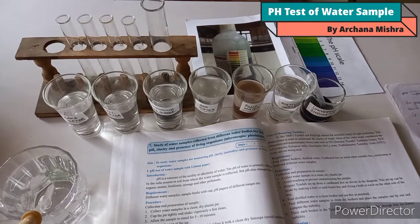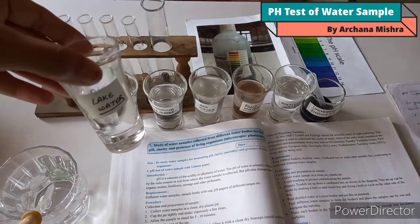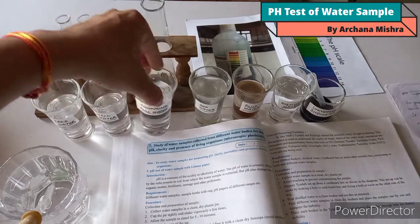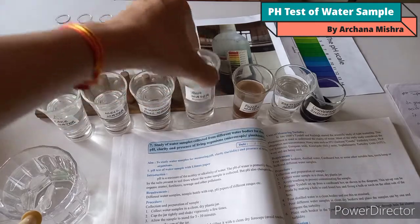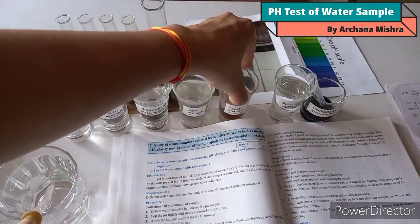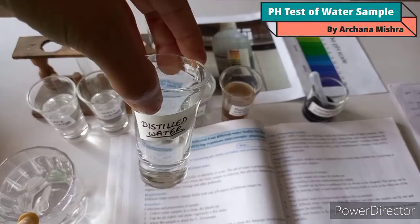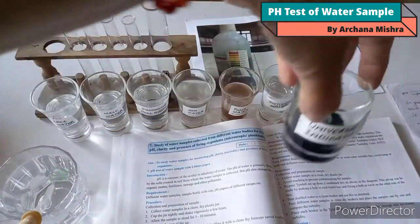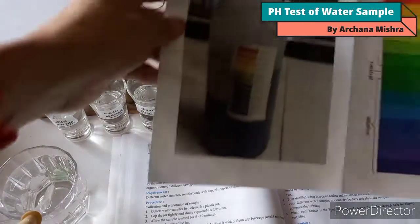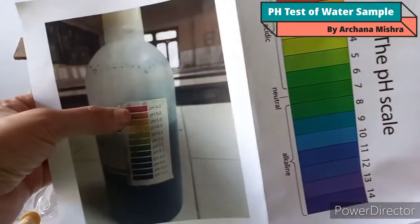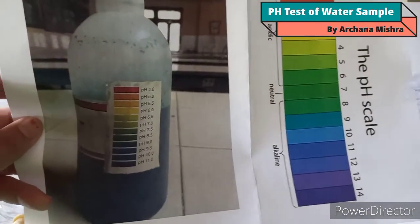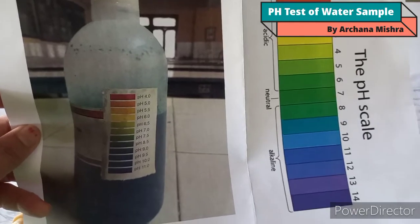For our experiment, I have taken water samples from different sources: lake water, well water, swimming pool water, sea water, pond water, distilled water, and tap water. I am also using a universal indicator and a pH scale. With the help of these, we are going to find the pH value of each water sample.